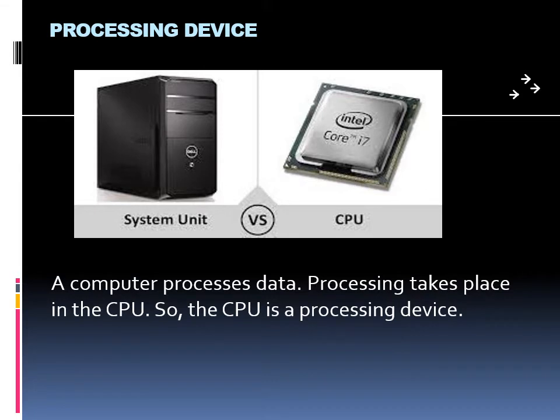Processing device. A computer processes data, and processing takes place in the CPU. So the CPU is a processing device.